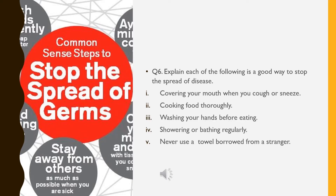Dear students, the next question is: Explain why each of the following is a good way to stop the spread of disease. The first: Covering your mouth when you cough or sneeze. The answer is: so that microorganisms do not spread and cause harm to others. You can add more explanation.